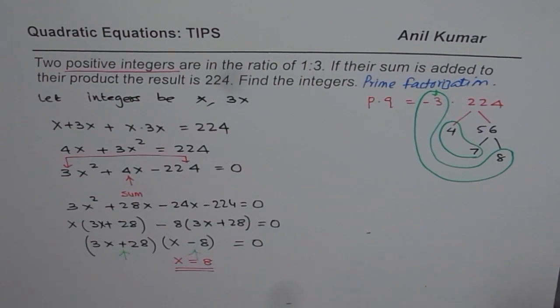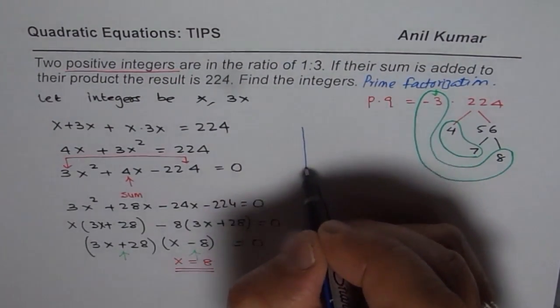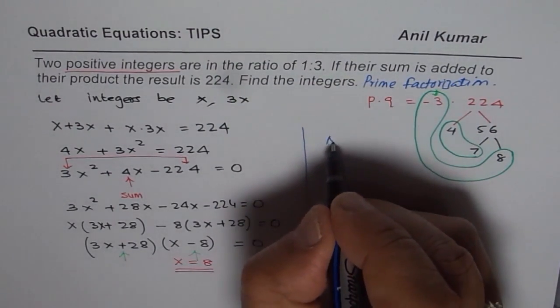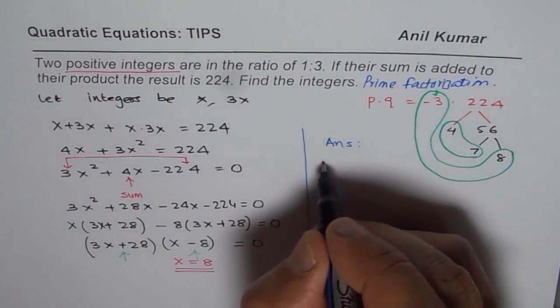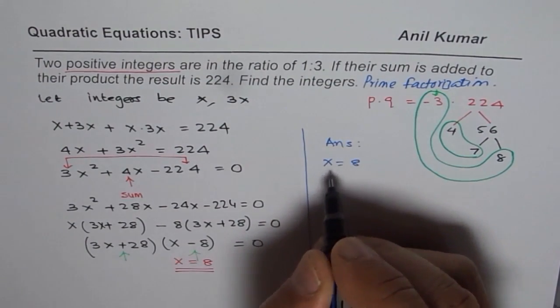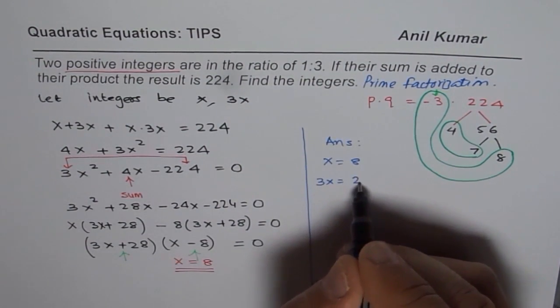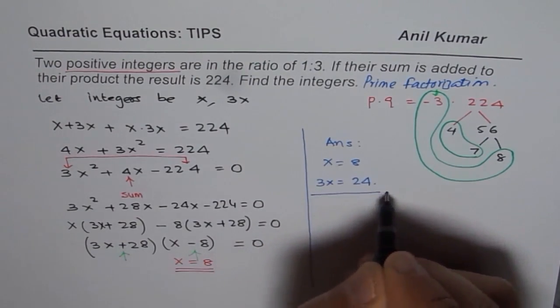So we got our solution that is x equals to 8. Therefore the two numbers are, we can write down our answer, that the numbers are x equals to 8 and the other number will be 3x, that is 3 times 8 is 24. So that is the solution for us.